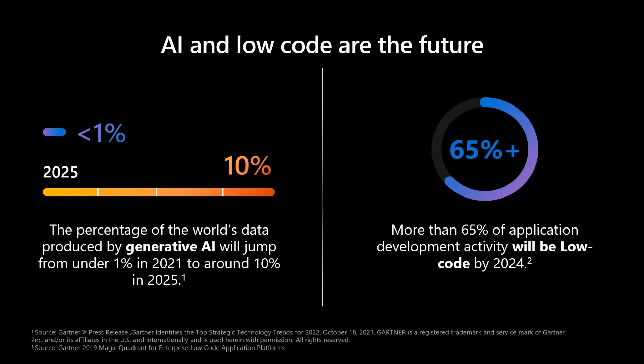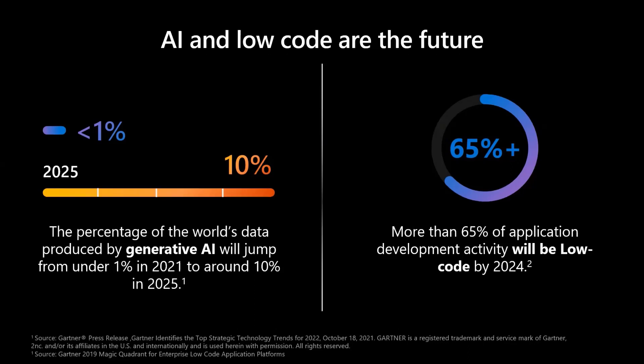And over 65% of application development activity will be low-code by 2024. So it's pretty evident that AI and low-code together have a very bright future.